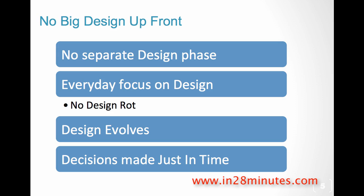No big design up front means there is no separate design phase. Each day, a developer does a little bit of design and coding, and unit testing. If you're following test-driven development, you write your unit test first and then do your coding. Doing TDD is a good thing to improve your design because you start looking from the outside in. Design keeps evolving — with agile, the focus is on evolving design and making decisions just in time. Architectural decisions, which are very important, are made a little bit up front. We'll look at that distinction.